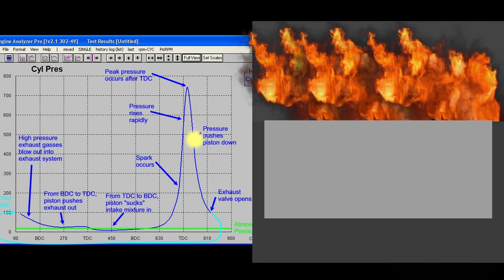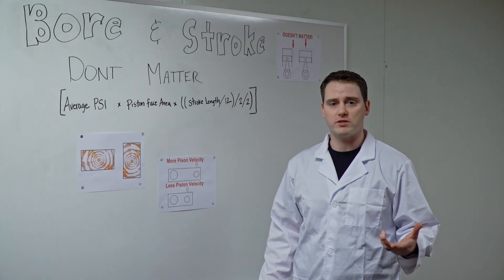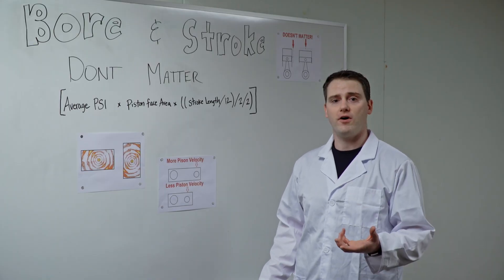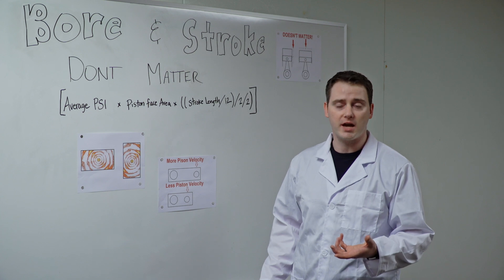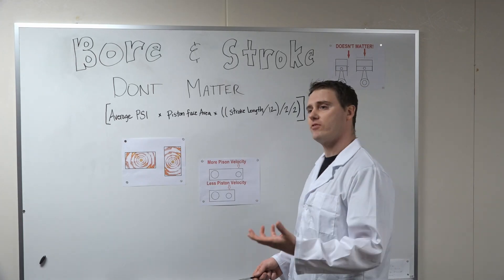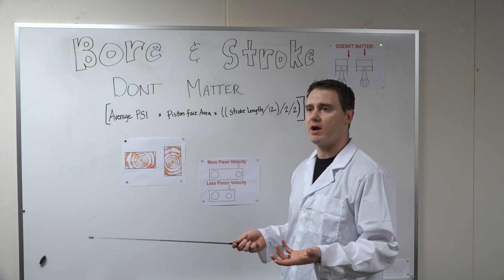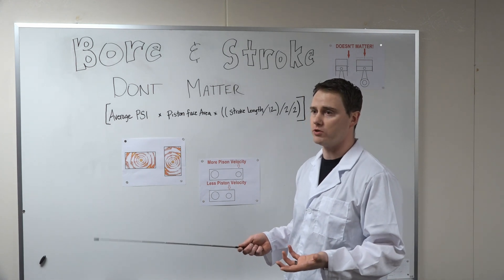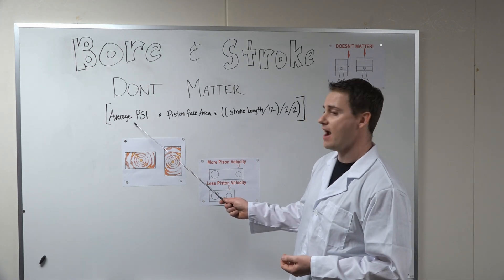For a healthy street engine, this peak can be somewhere around 1,000 PSI, steadily falling down to about 100 PSI by the time the exhaust valve opens. That means we must average the PSI to somewhere right around 500, which is the number we'll use for the first part of this, average PSI.